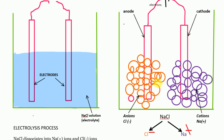The same happens with the Na⁺ ions. Since the cathode is negatively charged, the Na⁺ ions will get attracted towards the cathode, because the cathode is negative and Na is positive. Opposite charges attract each other, so all the Na⁺ ions will get attracted towards the cathode.